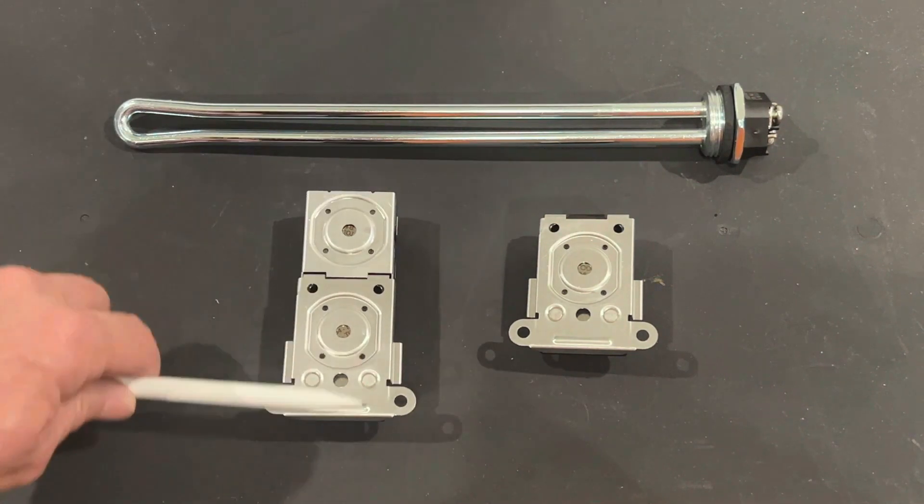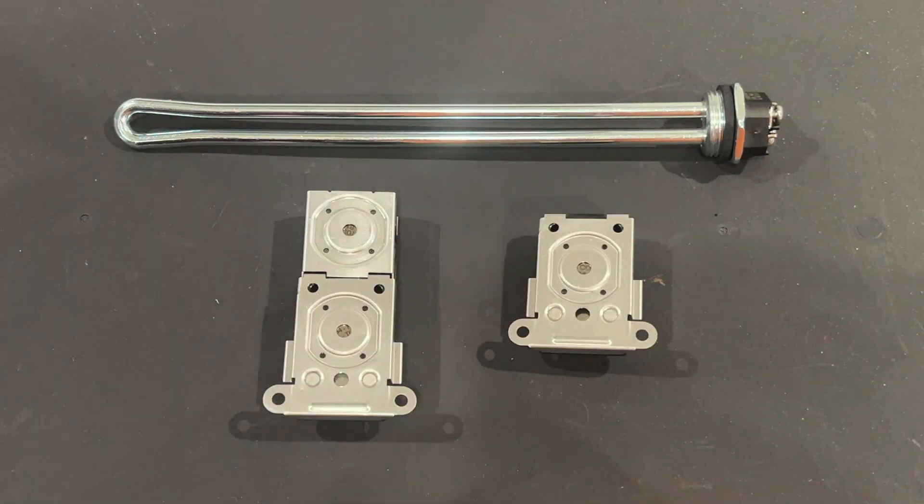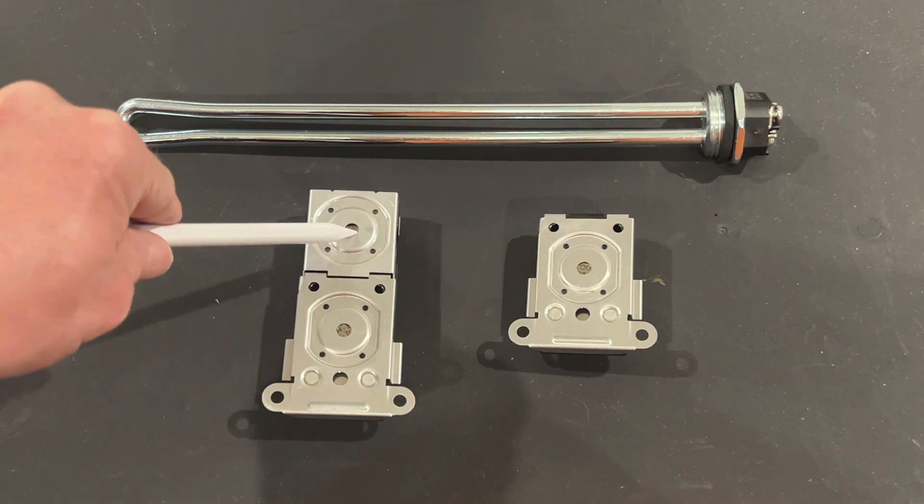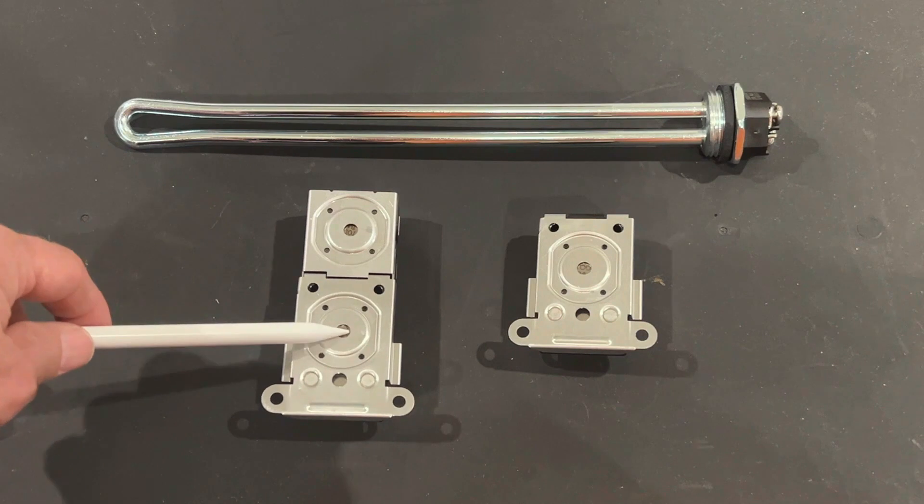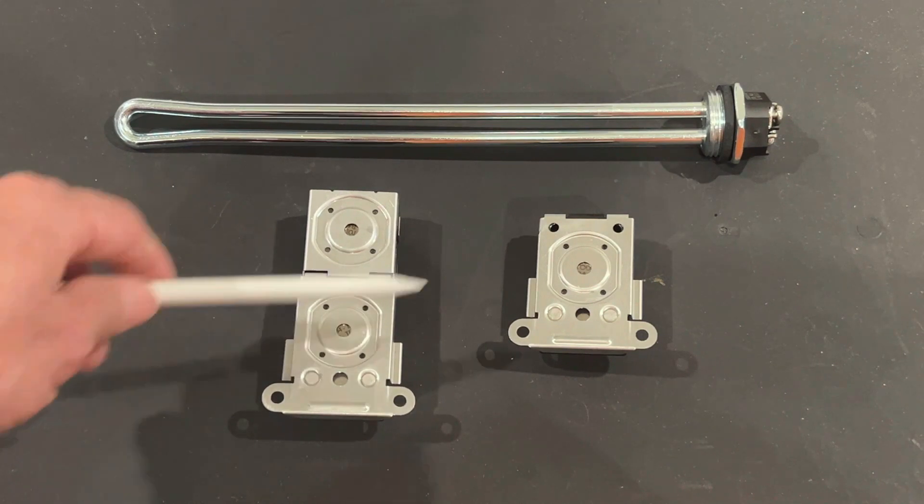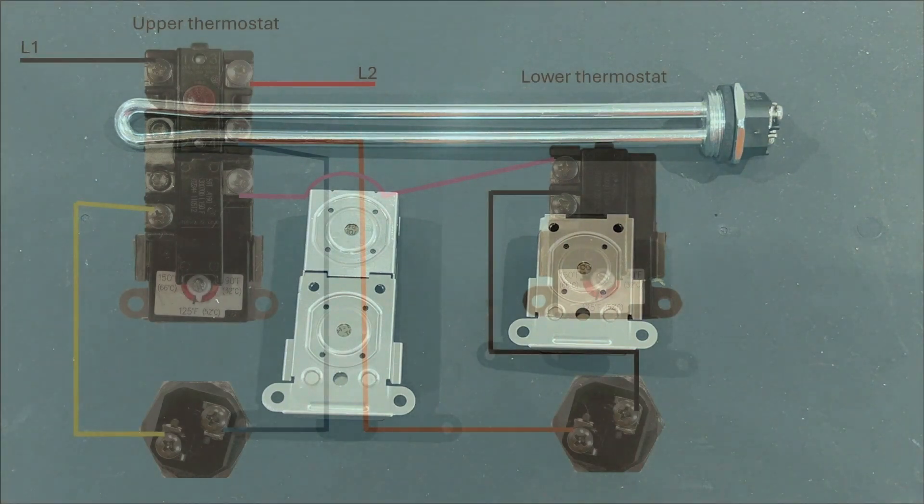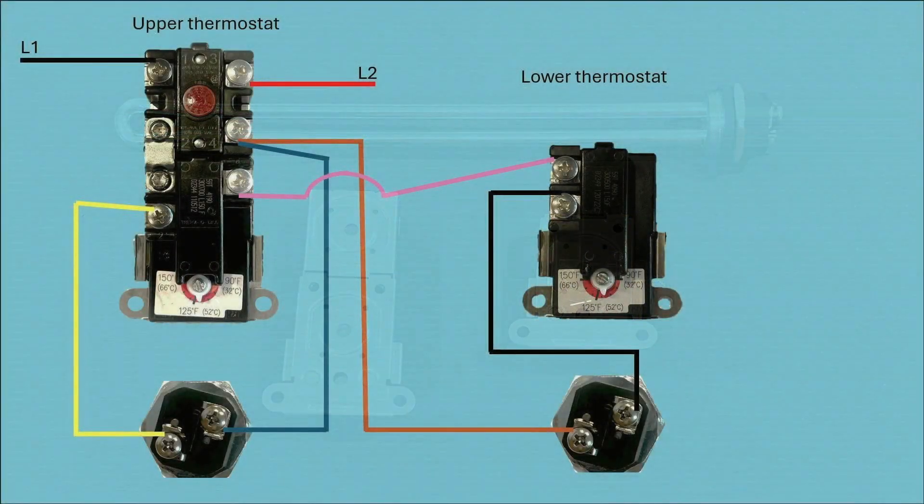So this is the part of the thermostat that's actually against the metal tank that senses the water temperature. This is the one that would activate that high temperature cutout. And this is the one that senses the water temperature to turn the thermostat off and on. And this one turns the lower thermostat off and on. To get a better idea of how these work together, let's go back to the animation.